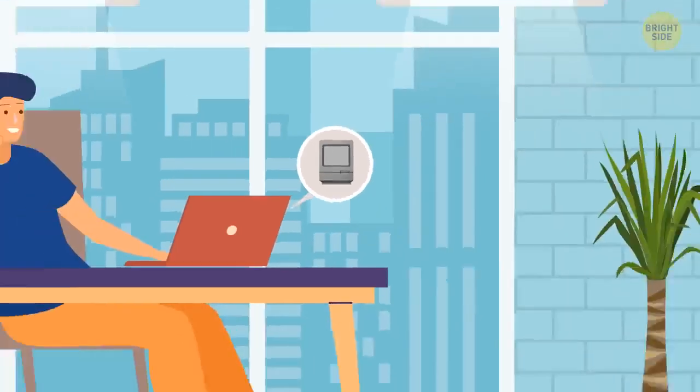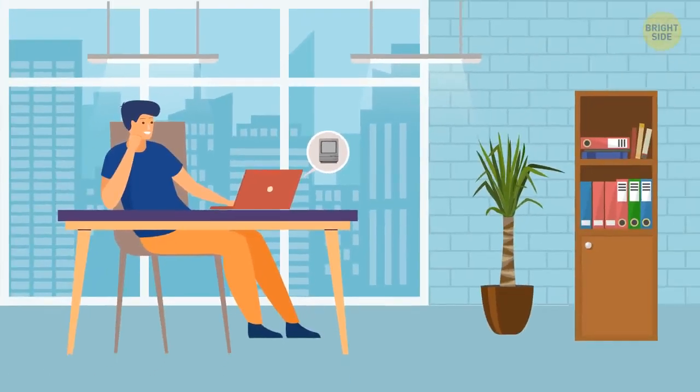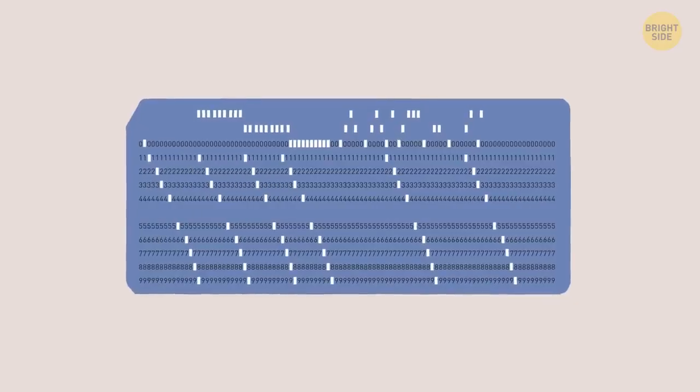It then read the information and converted the sequence of holes into digital info. The system was created as early as the 1800s, but it was the start of the technological revolution. The punch cards would then evolve into zeros and ones, just like we have today.